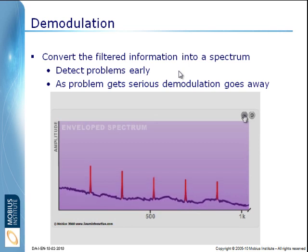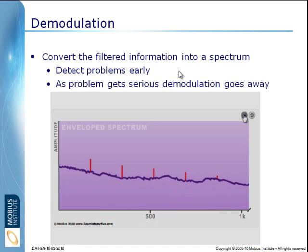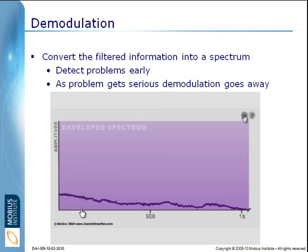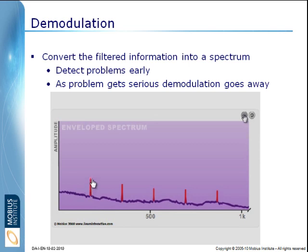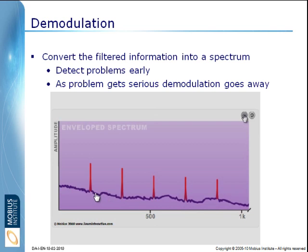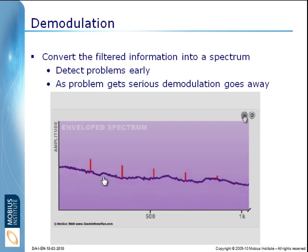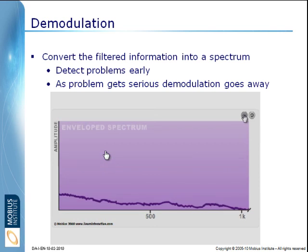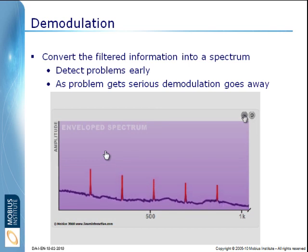We can detect problems up to a year or more before they really need to be attended to. On the other hand, as the problem gets worse, these peaks will get higher and higher. But as it gets really bad, the noise will begin to rise until we're left with only noise — which is to say the demodulation goes away. So as the problem gets worse, we will not see usable information in the demodulated spectrum.